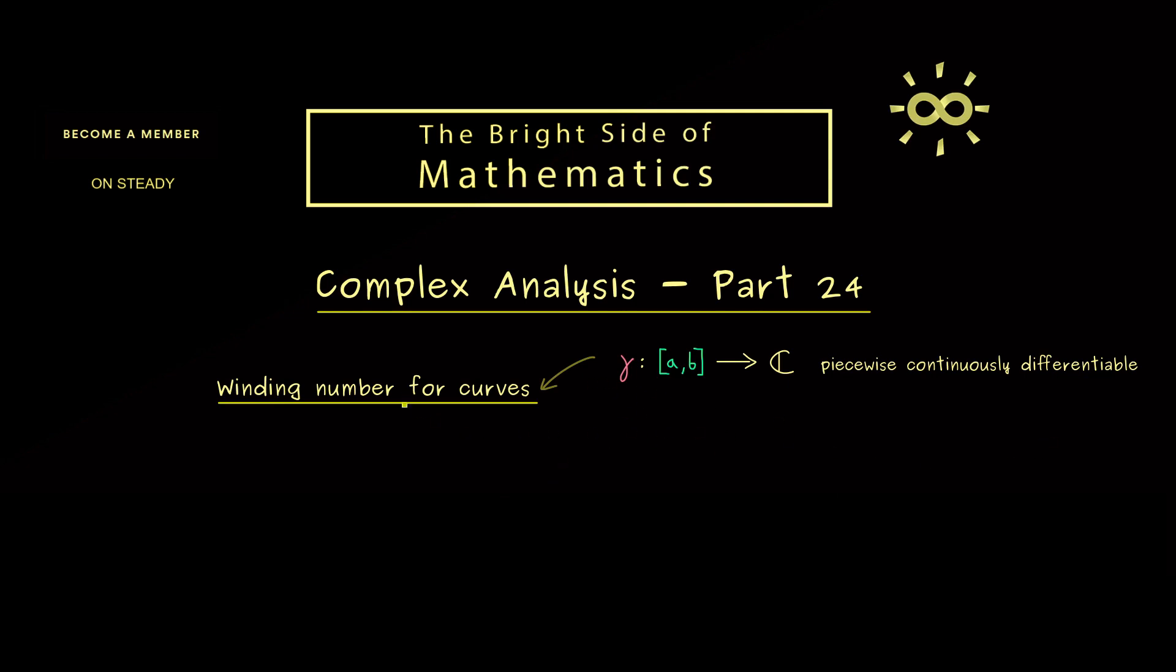With this we are ready to talk about the concept of a winding number. Indeed, we will define this number always with respect to a given complex number z₀. Let's start with a very simple curve, a circle around z₀. We start here and then walk counterclockwise around z₀. Hence we count one turn around the point, which means the winding number should be 1. In order to calculate this turn, you could connect z₀ to the curve and then look what happens to the angle when the parameter of the curve increases. In this example we easily see we have a total angle of 2π in the end.